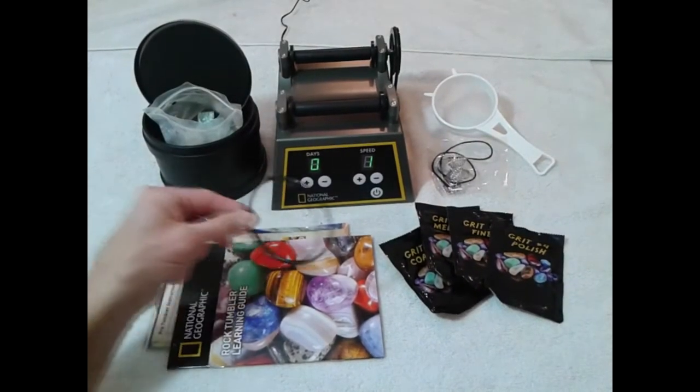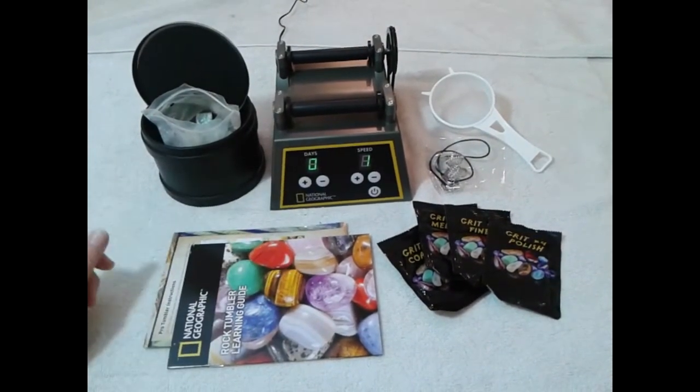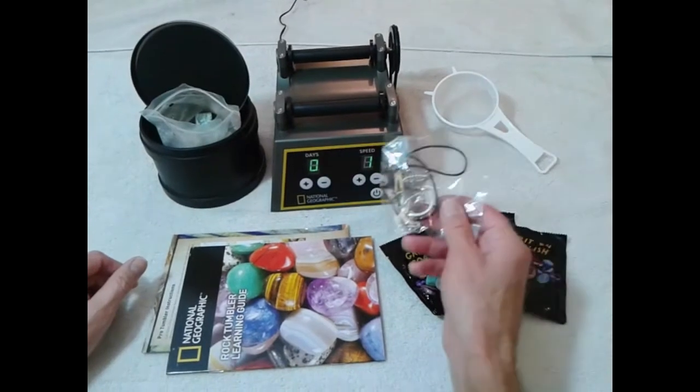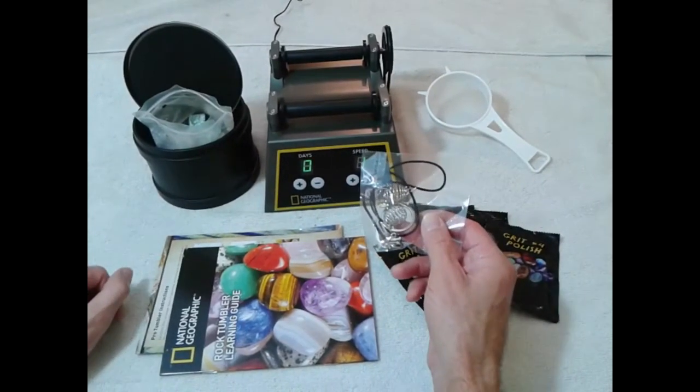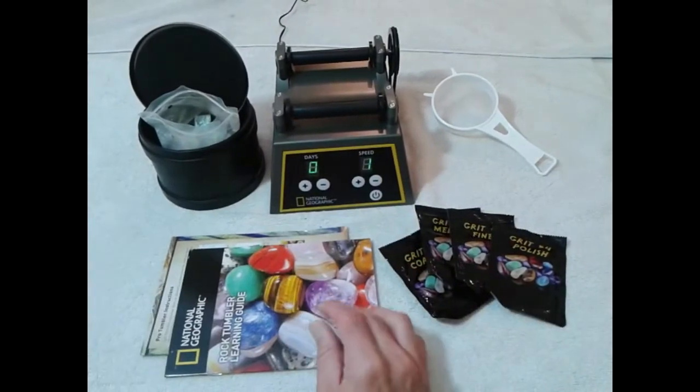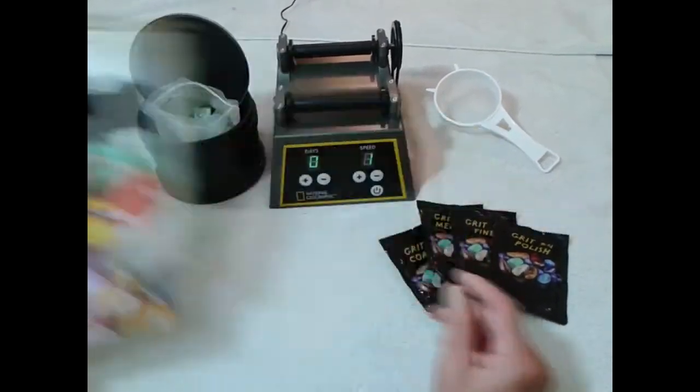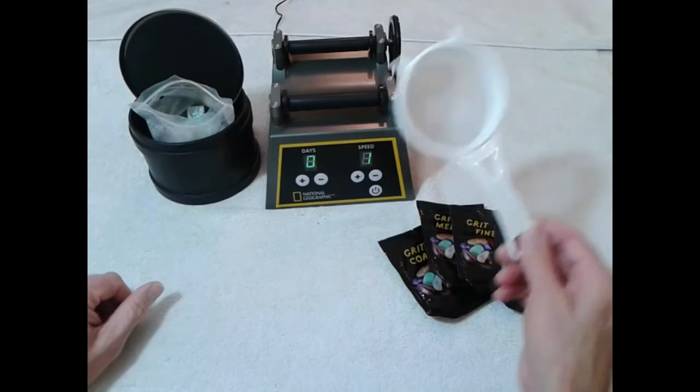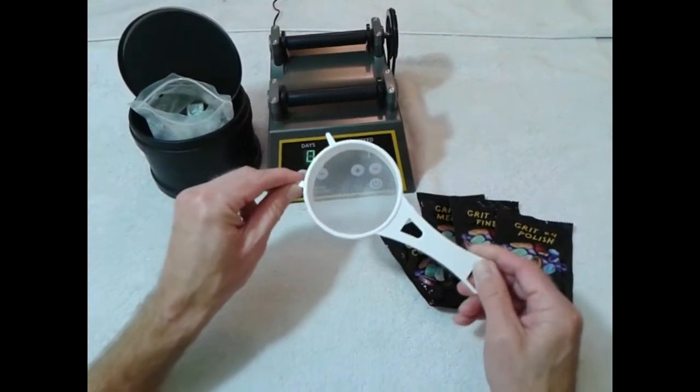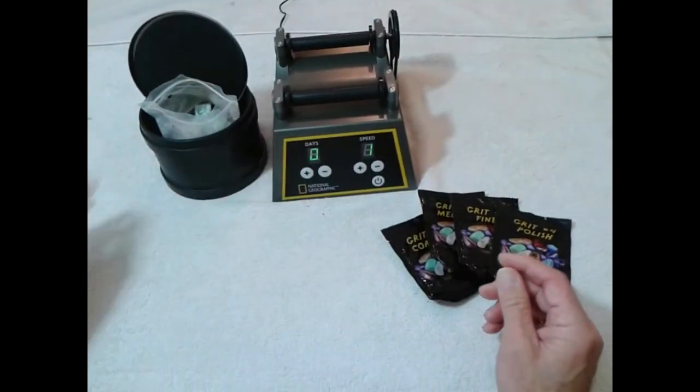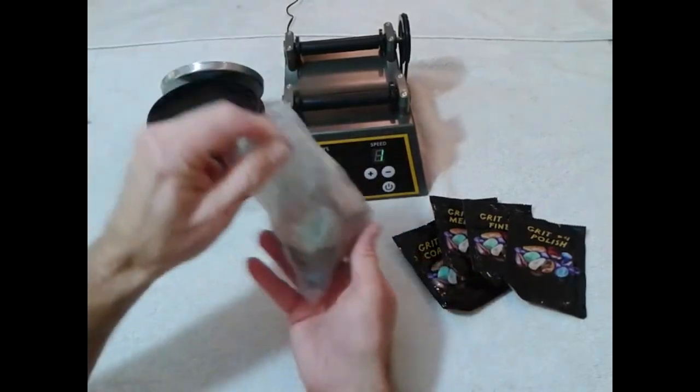This is a spare belt for the tumbler machine right here, and this is an accessory that you can use to make jewelry with the rocks after you've polished them. This is an instruction guide and an educational guide right here, and this is a strainer that you can use when you finish tumbling the rocks. It also comes with some nice stones here.